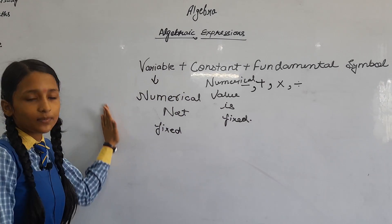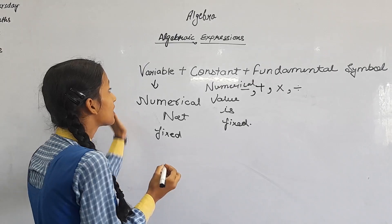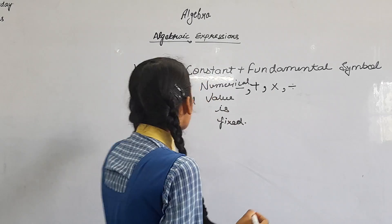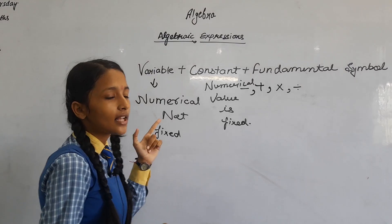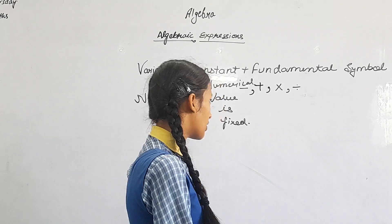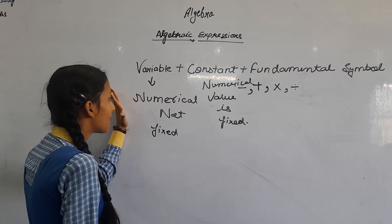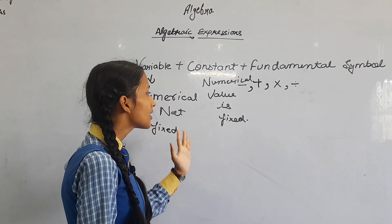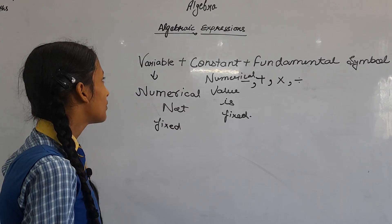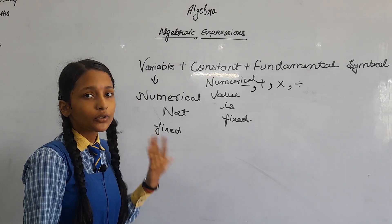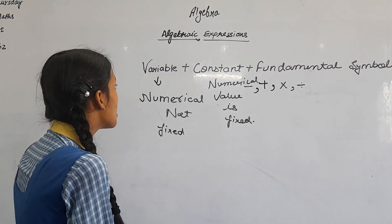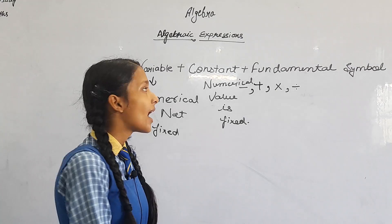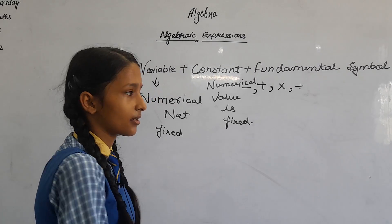In Algebraic Expression, we see the definition — the combination of both. If there is no combination of one, the Algebraic Expression is not formed. When we solve a question of Algebraic Expression, the variable value is not fixed and the constant value is fixed permanently.